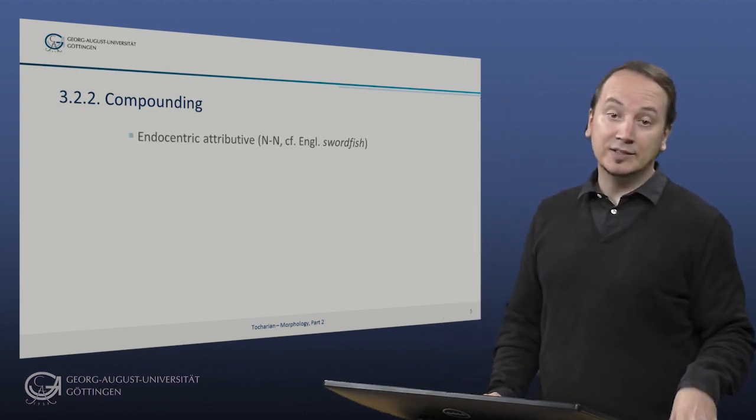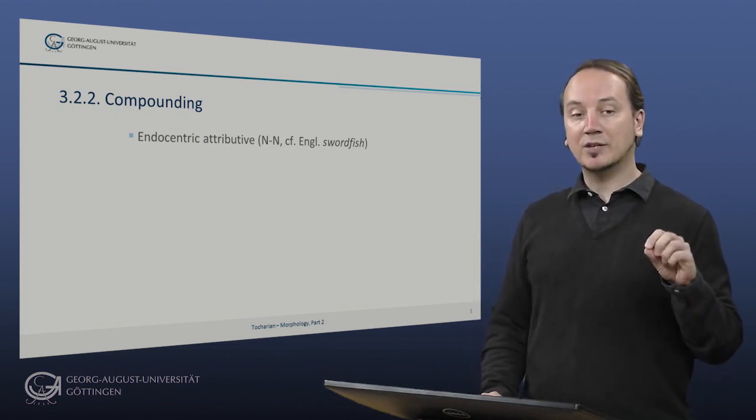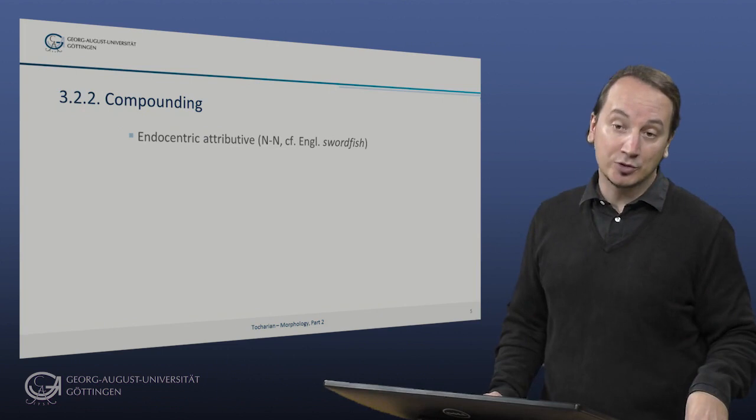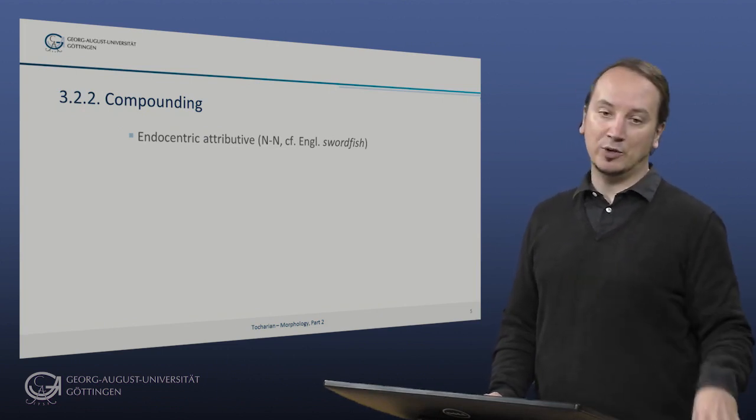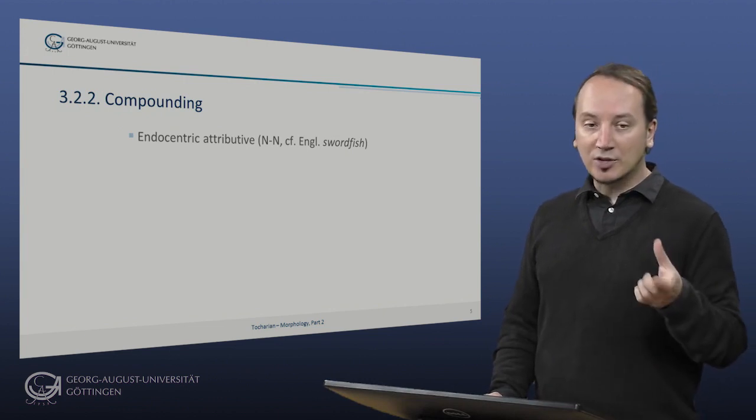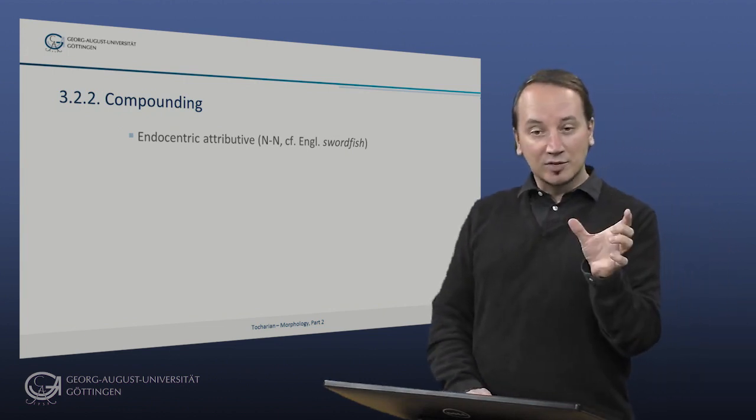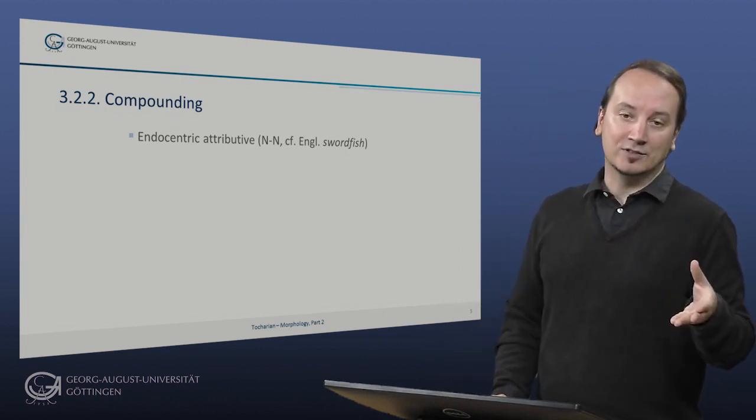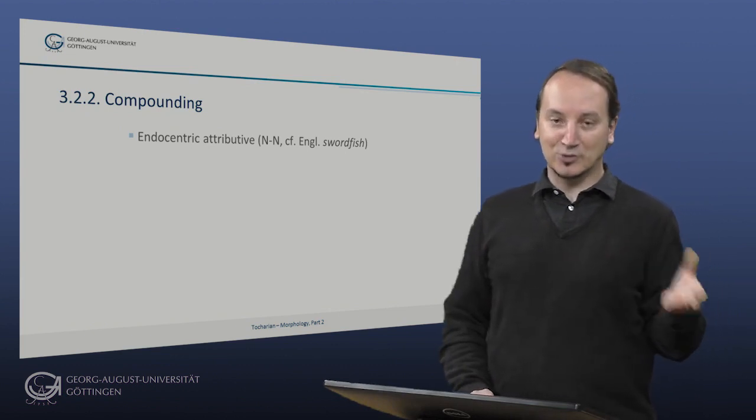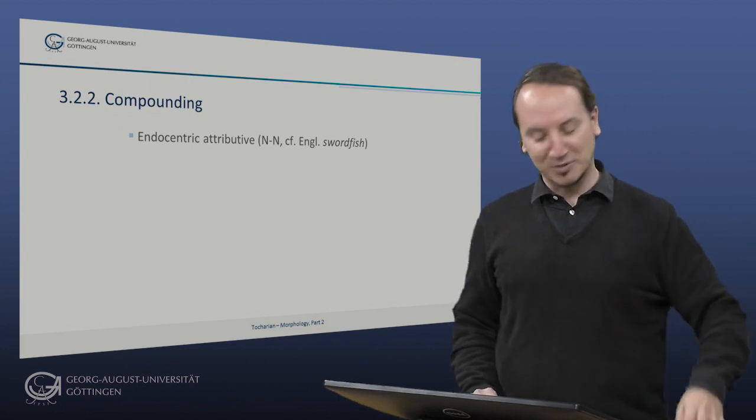Next we're dealing with an endocentric attributive compound. Attributive means that there is a syntactic relation of attribution or modification between the head and the non-head of the compound. For noun structures, these are compounds where an of relation between the two constituents would not be possible, like English swordfish. So swordfish is not the sword of a fish or the fish of a sword, but is a fish that has sword-like characteristics.